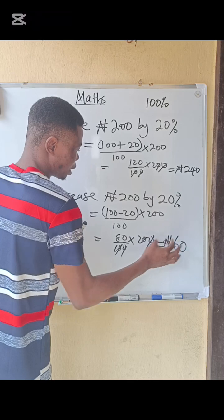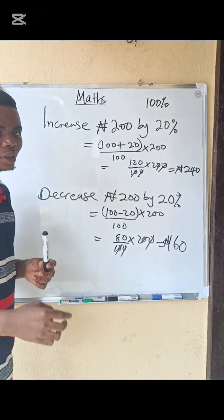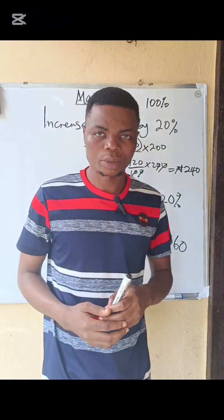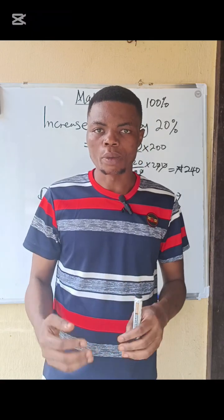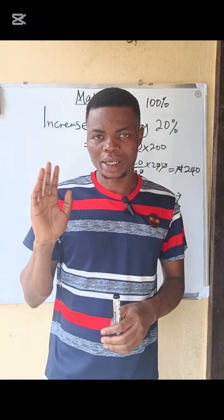So when you decrease 200 by 20%, the answer is 160. It's very simple. I hope you have learned something today. Please do not forget to subscribe to my channel and share for more exciting videos. Bye.